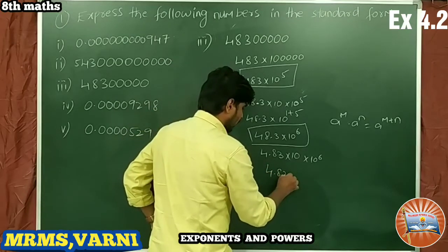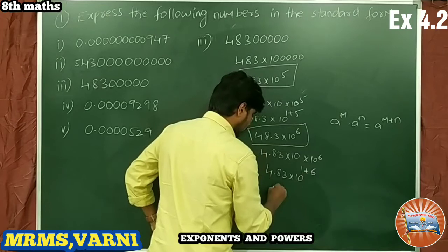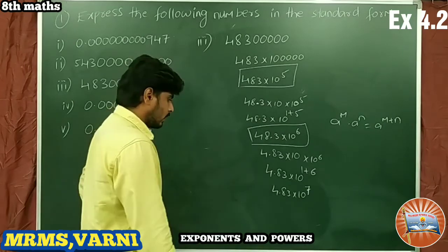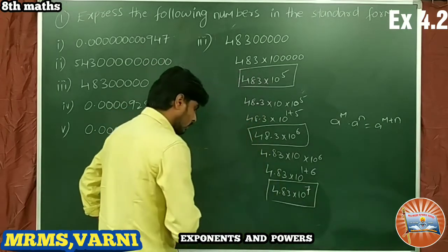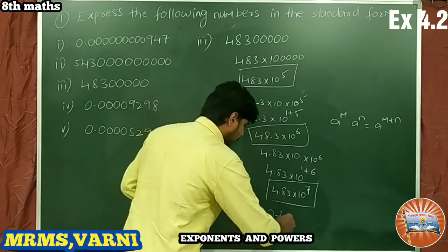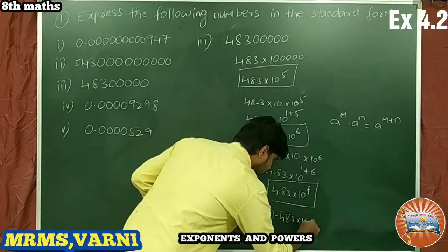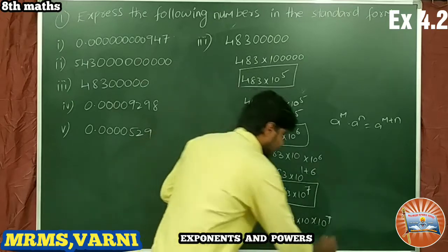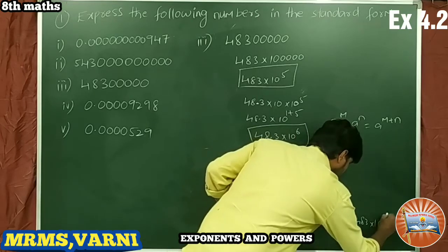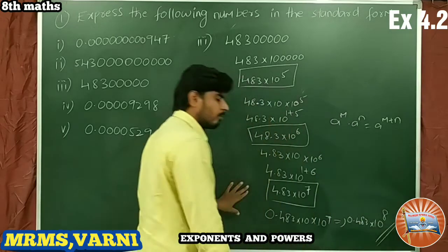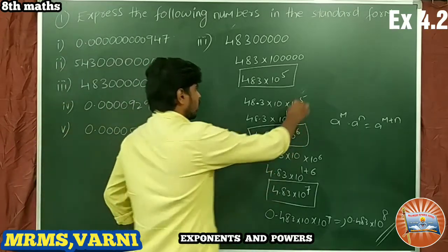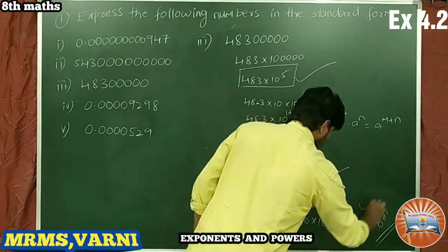Moving the decimal point further: 4.83 × 10^(1+6) = 4.83 × 10^7. Or we can write 0.483 by taking the decimal point in front of 4 and multiplying by one more 10, giving 0.483 × 10^8. All four forms are correct answers.